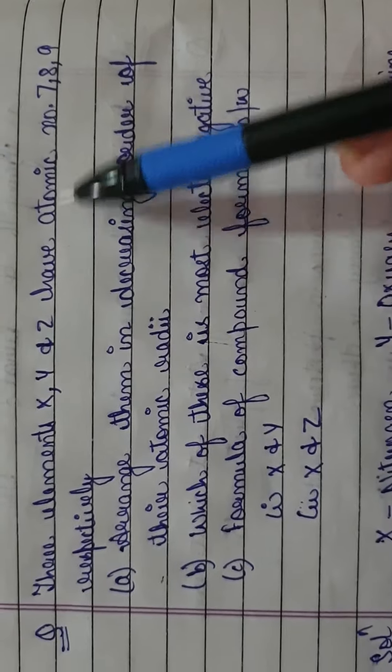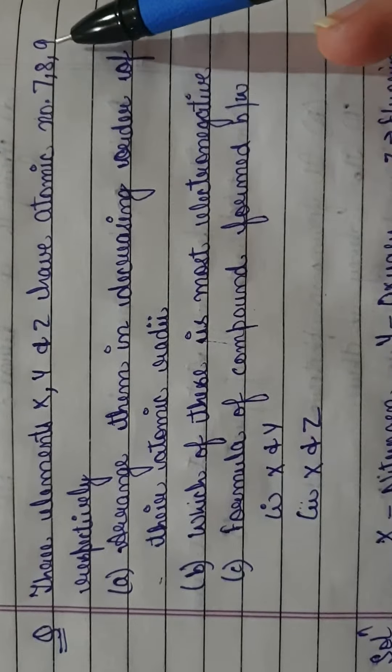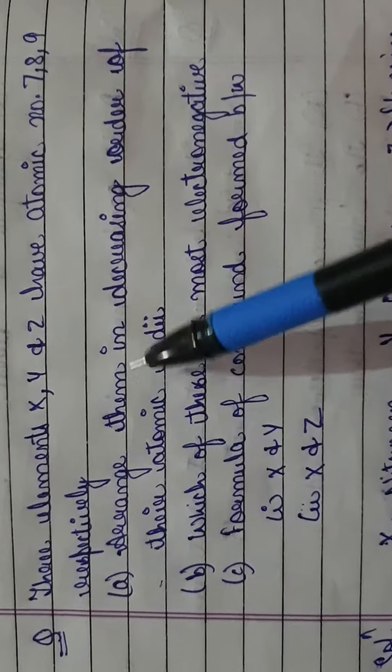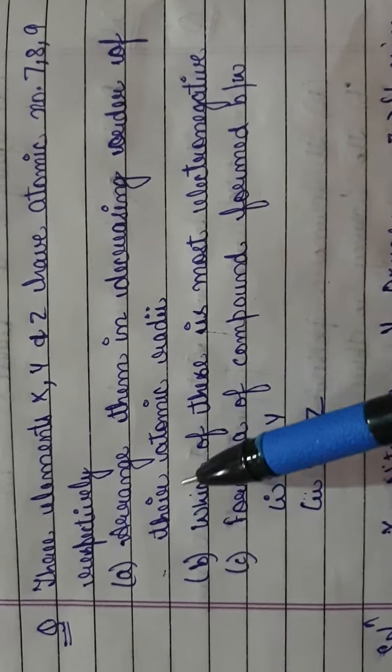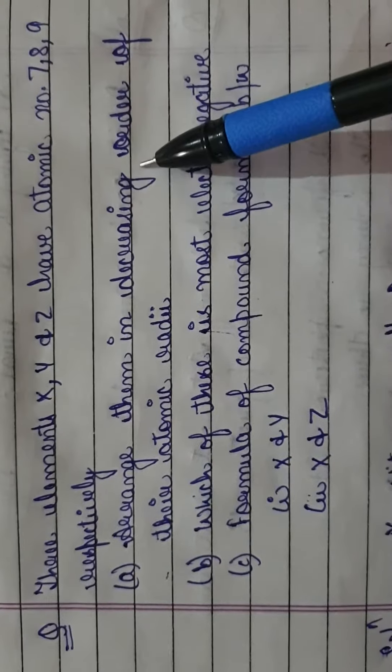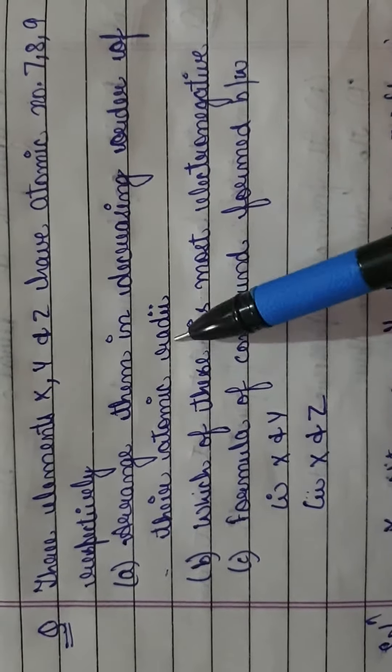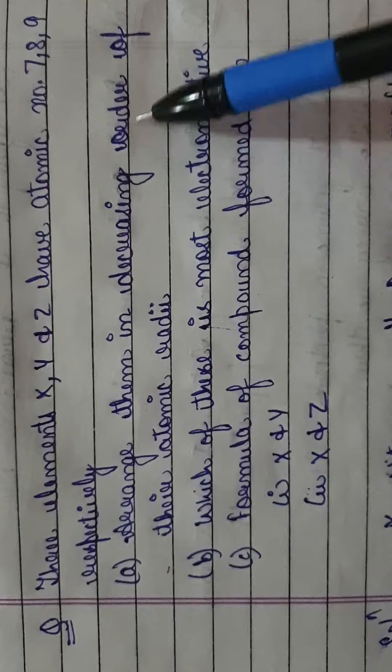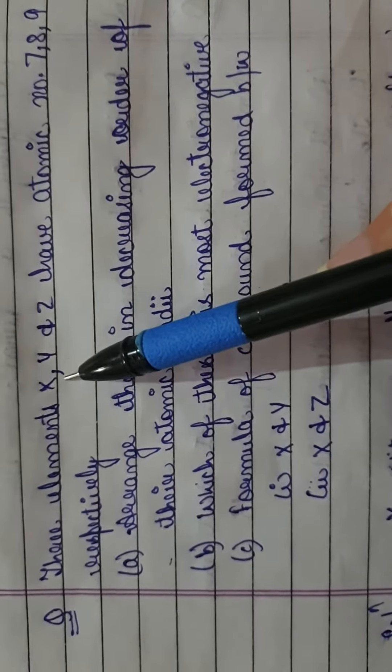Three elements X, Y, Z have atomic numbers 7, 8, 9 respectively. Arrange them in decreasing order of atomic radii.